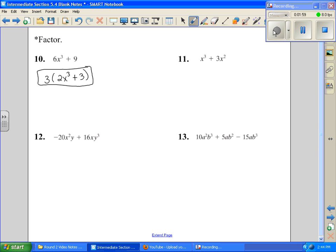Number 11, they both have an x squared in them, so if I divide the first one by x squared, I'm going to get an x. And the second one, I'm just going to have a 3 left over.